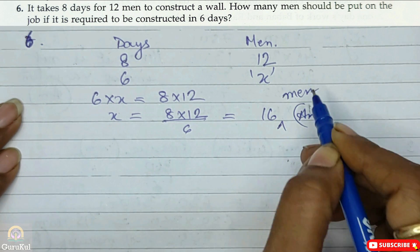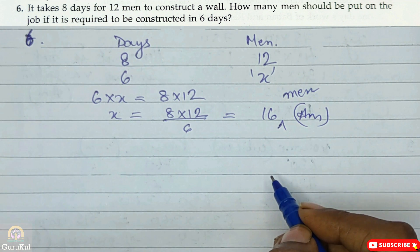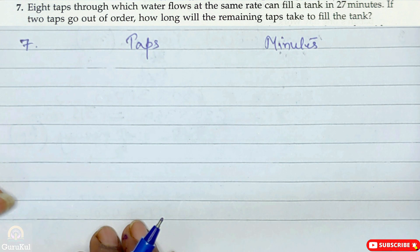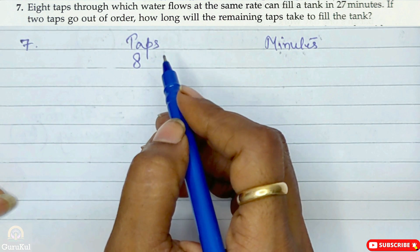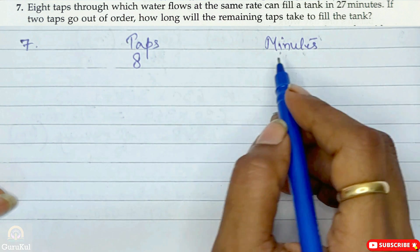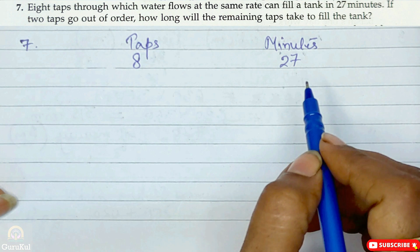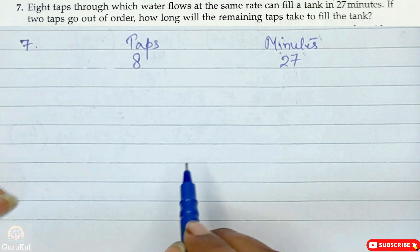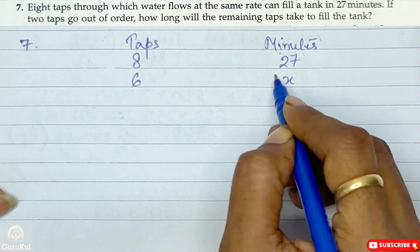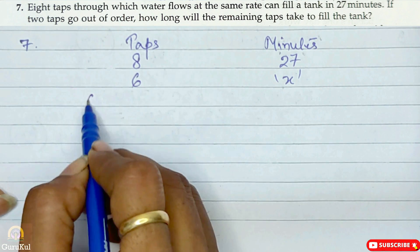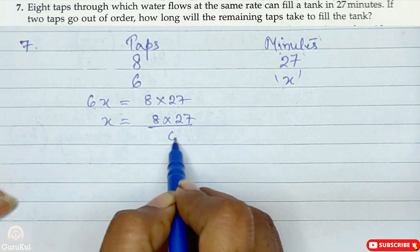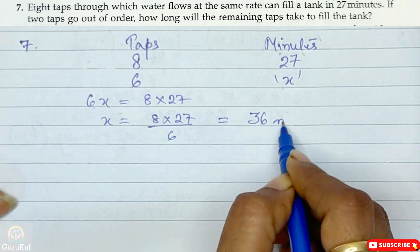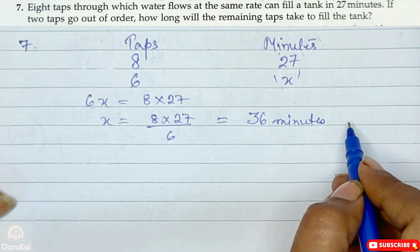So 16 men will be needed to complete the job in 6 days. Question number 7: 8 taps through which water flows at the same rate can fill a tank in 27 minutes. If 2 taps go out of order, 6 taps remain. More time will be needed. So 6x = 8 × 27 ÷ 6, which gives us 36 minutes.